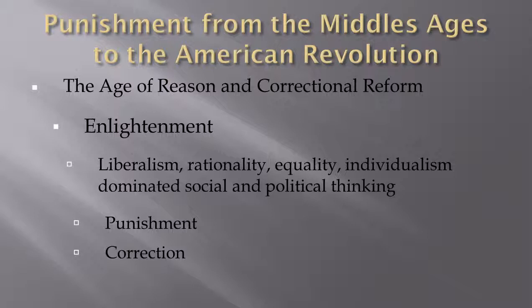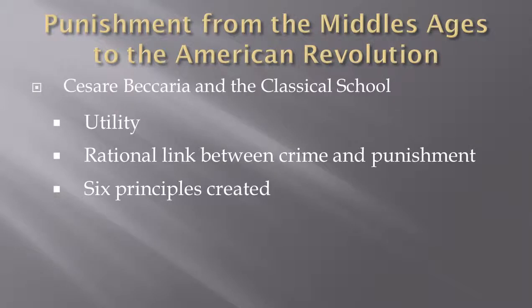That concept of correction is: can we change the behavior that people are demonstrating that is not appropriate or not tolerated by society? Were there methods to correct that through various ideals? The foremost part of this early period was Cesare Beccaria and the classical school of thought. He first introduced the concept of utility — what is the greatest happiness for the greatest number of people — and further established the rational link between crime and punishment, connecting the level of crime to the level of punishment.